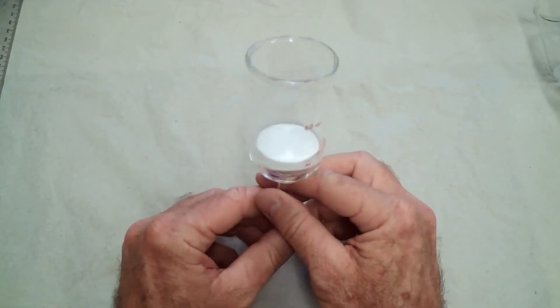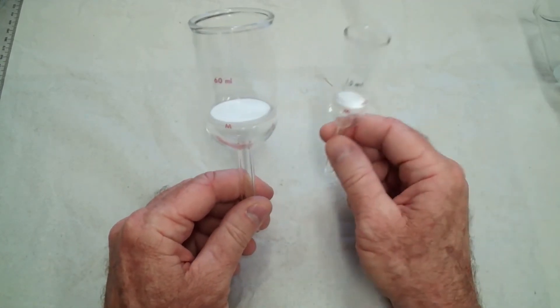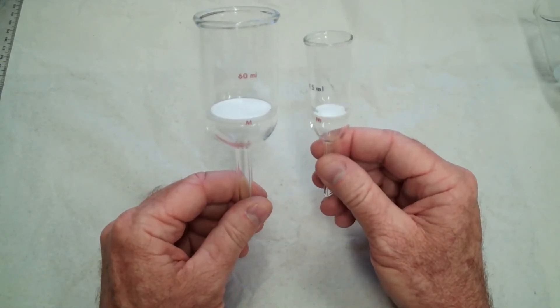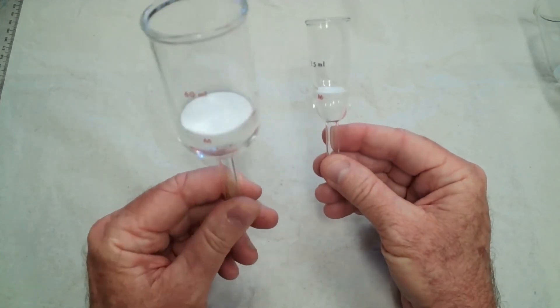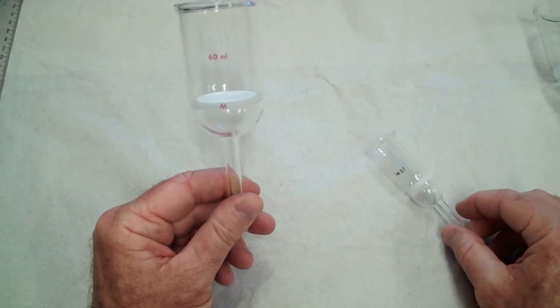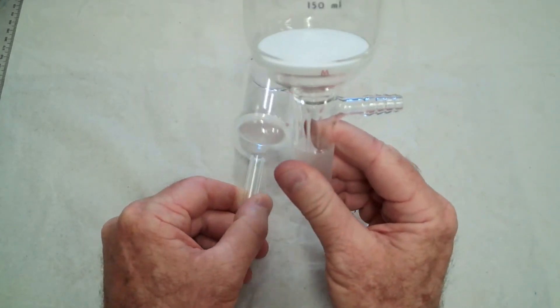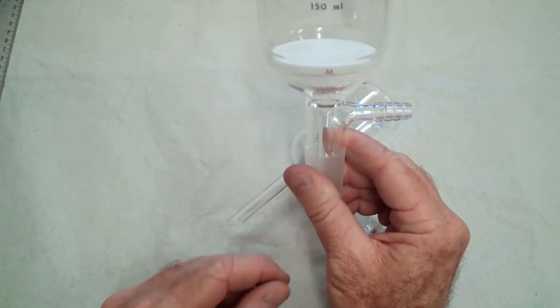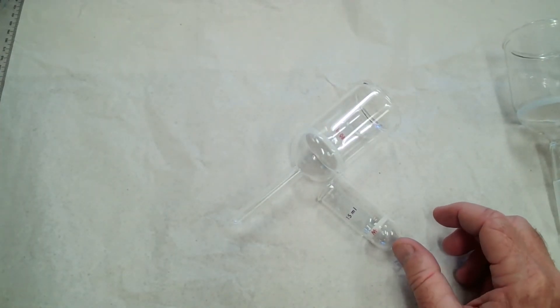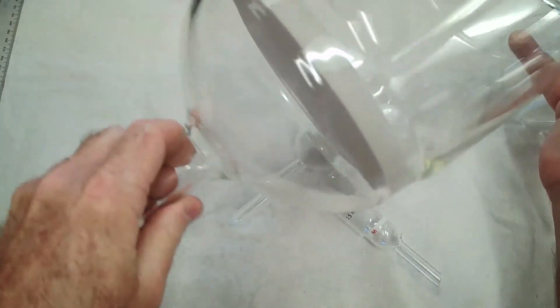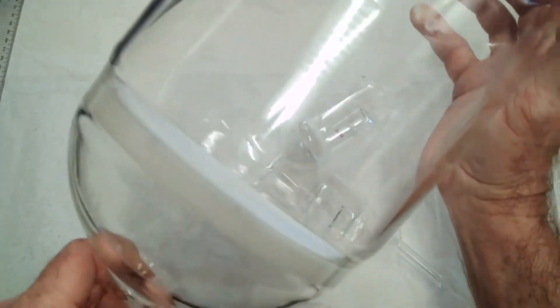And this is used in this instance called a Buchner funnel, so it's a filter Buchner funnel with a plain stem. They also make Buchner funnels with a vacuum portion, and they can make anywhere from very small to very large Buchner funnels.